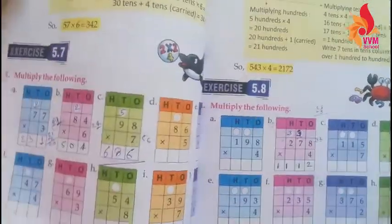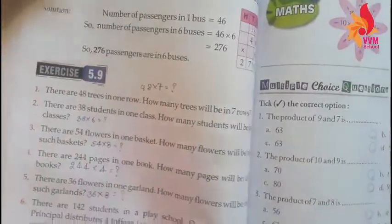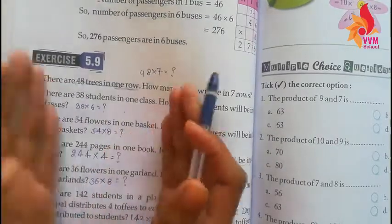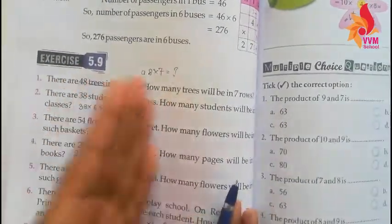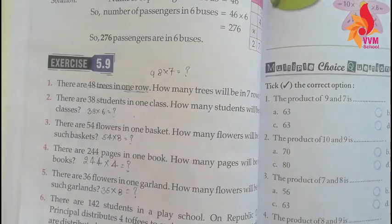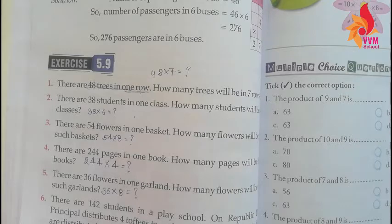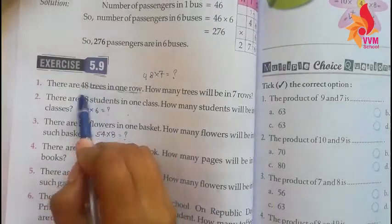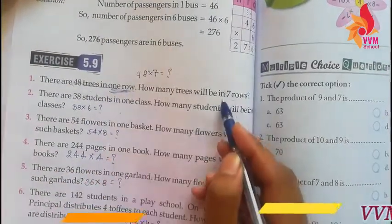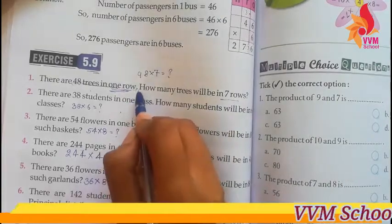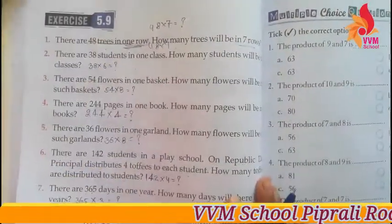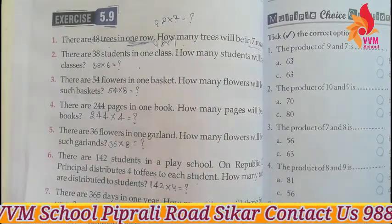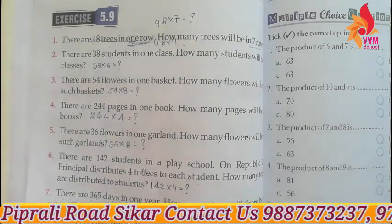Similarly, we have to do 3-digit number multiplication with carrying over. Next are story problems — you are given the value of one thing, and you have to find the value of more. For example, if there are 48 trees in one row and you have to find how many in 7 rows, you do 48 into 7. All such story problems in Exercise 5.9 will be solved this way.